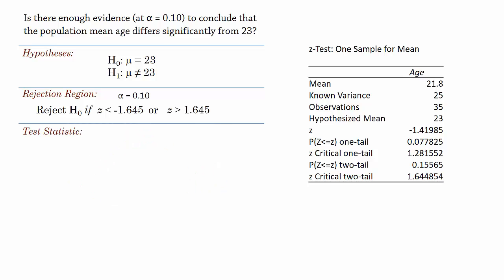For the test statistic, we have Z equals negative 1.42. The p-value of the test will be the two-tailed p-value here, which rounded gives 0.156.